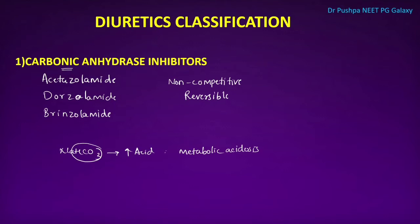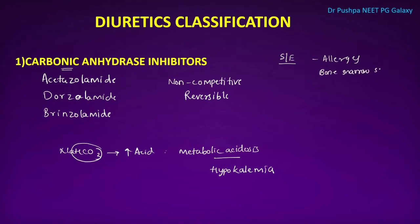Carbonic anhydrase inhibitors act on the collecting duct to inhibit the secretion of H+. This causes acidosis, and since potassium excretion is increased, it also causes hypokalemia. So carbonic anhydrase inhibitors cause metabolic acidosis and hypokalemia. As they are sulfa drug derivatives, they can cause allergy and bone marrow suppression.